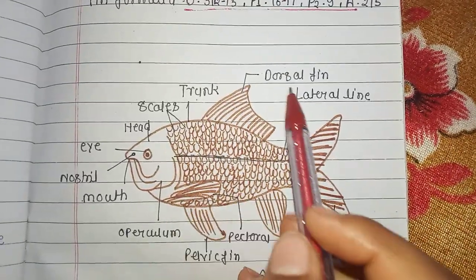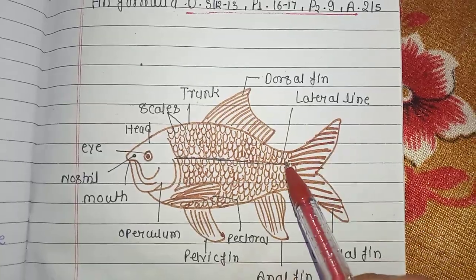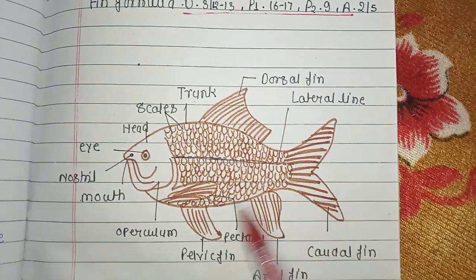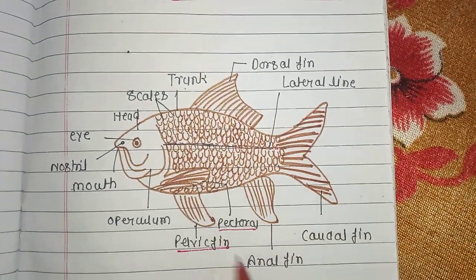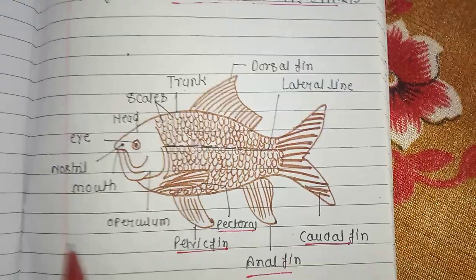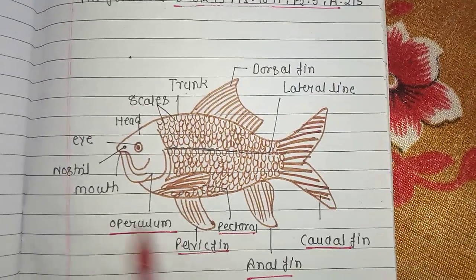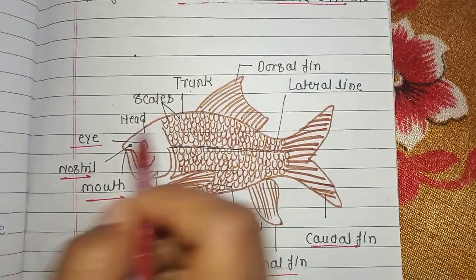Here is a labeled diagram of Labio rohita, showing: scales, trunk, dorsal fins, lateral line, pectoral fin, pelvic fin, anal fin, caudal fin, operculum, mouth, nostrils, and eyes.